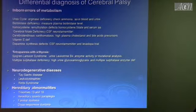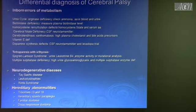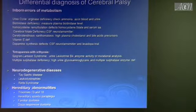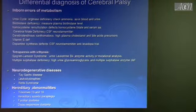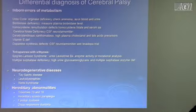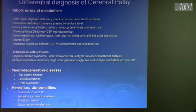Differential diagnosis of cerebral palsy: if a patient does not have classical findings of CP — no hypoxic ischemic encephalopathy, no prematurity — and the kid is spastic, you need to think of other disorders. Inborn errors of metabolism include: urea cycle defects, biotinidase deficiency, homocysteine/remethylation defects, cerebral folate deficiency, cerebrotendinous xanthomatosis, and dopamine synthesis defects. Tetraparesis with ichthyosis — if you see a quadriplegic child with skin abnormality — think Sjögren-Larsson syndrome and multiple sulfatase deficiency.